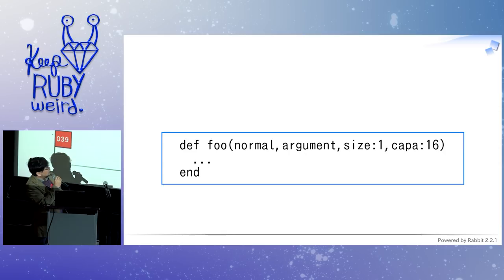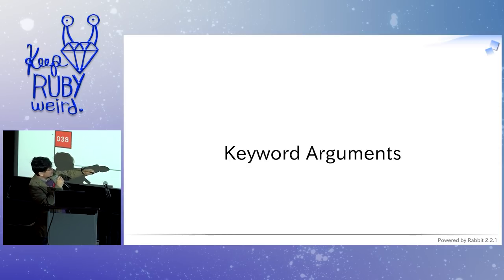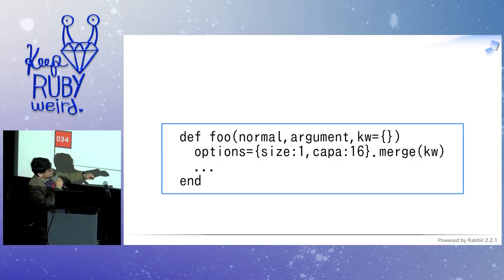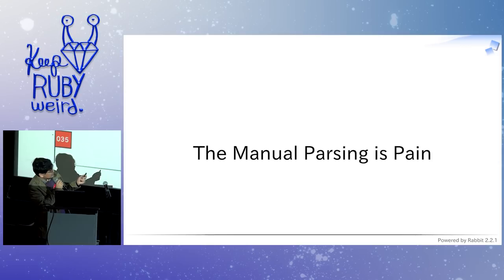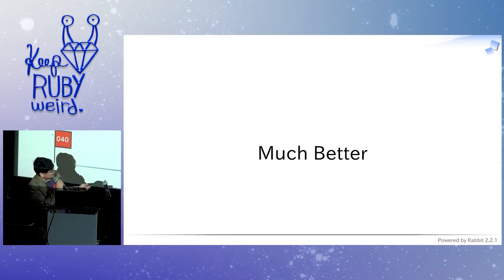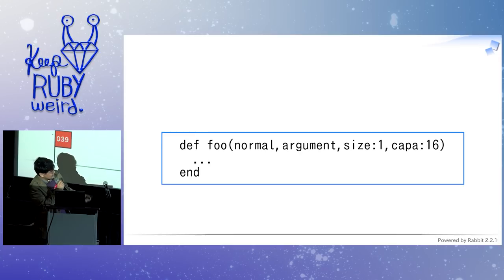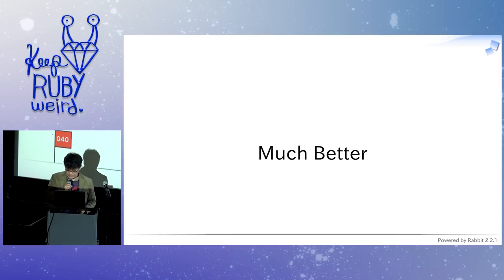This kind of manual parsing of keyword arguments was tedious, so we introduced proper keyword arguments in Ruby 2.0 to avoid manual parsing. For example, instead of writing the manual parsing version, in Ruby 2.0 we can define keyword arguments directly — much better. But still weird.